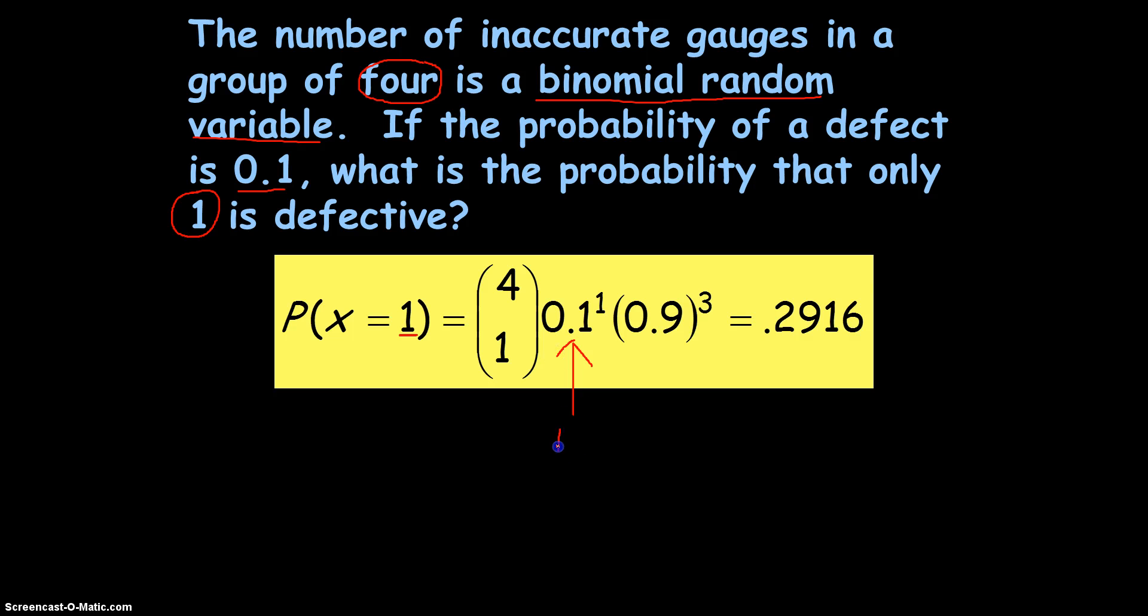Well, we know the probability of success, the probability of finding a defect, which is success, is 0.1. So that's P. And we know 1 minus P is simply 0.9. And here we're going to raise it to the power of N, which is 4, the number of trials, minus K. The number of successes, 1. Because we only want one success. And here's that pesky N choose K. So what does that translate into? Let's go over here.